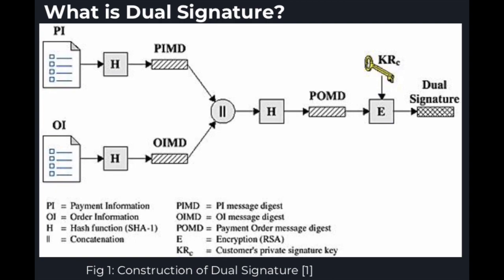In this case, the customer wants to send the order information (OI) to the merchant and the payment information (PI) to the bank. The merchant does not need to know the customer's credit card number, and the bank does not need to know the details of the customer's order. The customer is afforded extra protection in terms of privacy by keeping these two items separate. However, the two items must be linked in a way that can be used to resolve disputes if necessary.